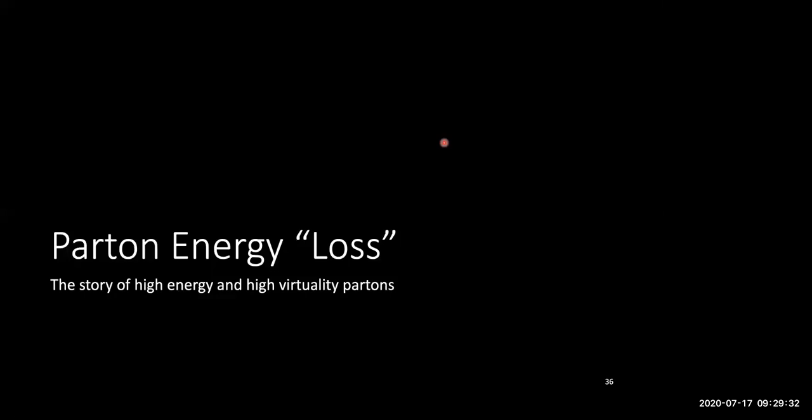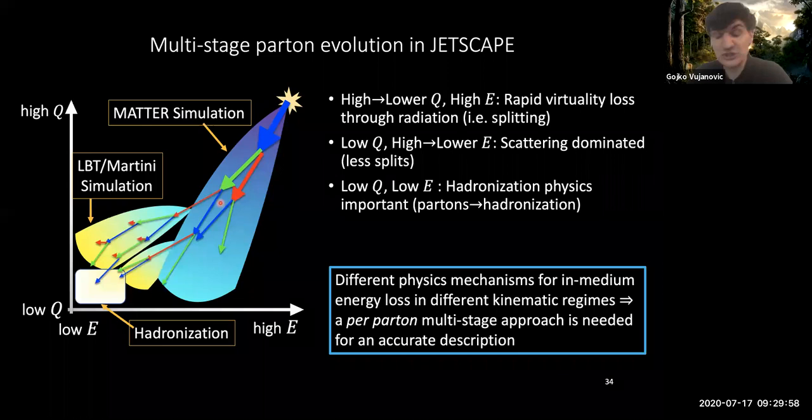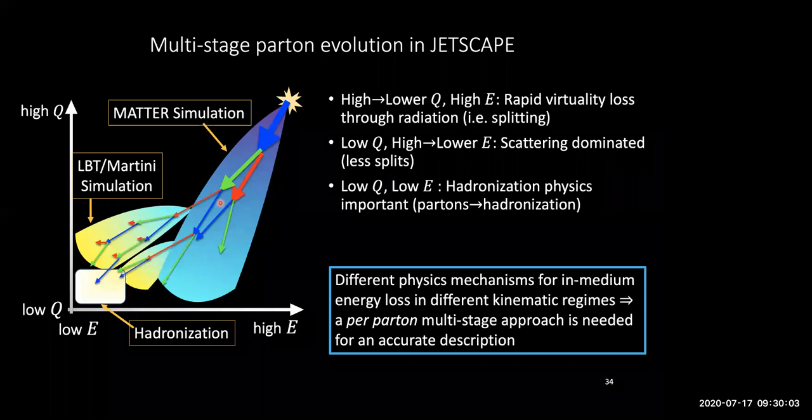So we, it's really, what we have really is a virtuality scale. So we allow the matter evolution to run down to a virtuality of about, well, we changed it, really, we explored anything from one to three GeV. So the Q is one to three GeV, so you have to square that. So that's one to nine GeV in terms of Q squared and GeV squared. So that's sort of like a free parameter, and that essentially is a tuning parameter.